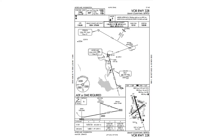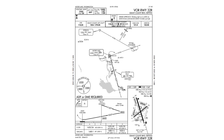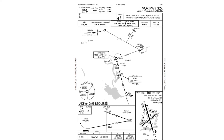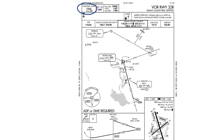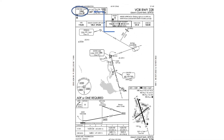This is the VOR approach to runway 32 right at Grant County International Airport in Moses Lake, Washington. Notice the frequency for the Moses Lake VOR is 115.0 and the approach course is 325.